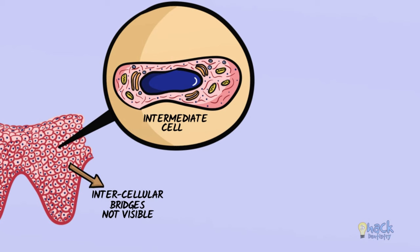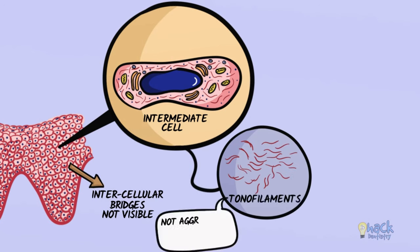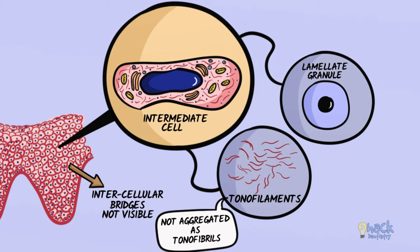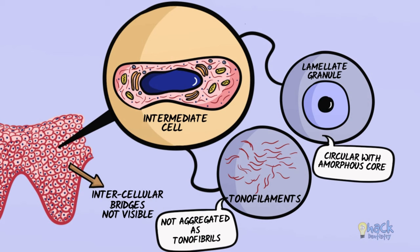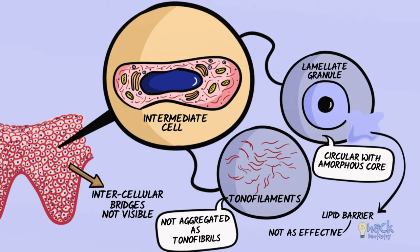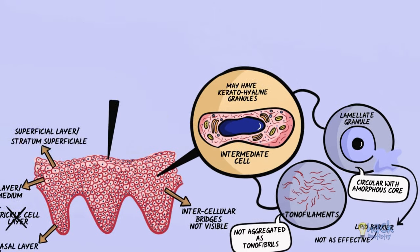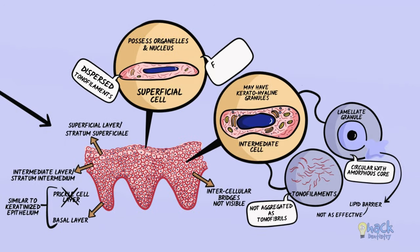The intermediate cells are bigger than granular cells but have dispersed tonofilaments that are not aggregated into tonofibrils. Lamellar granules or membrane coating granules in the intermediate cells are circular, in contrast to the elongated granules in keratinized epithelium. These granules secrete lipid material into the intercellular space between the intermediate and superficial layers, but do not form as effective a barrier as in keratinized epithelium. The intermediate cells may sometimes harbour keratohyalin granules. The superficial layer consists of flat cells that are not dehydrated, have fewer organelles, possess nuclei, and have dispersed tonofilaments, making this layer flexible and able to withstand compression and other applied forces.